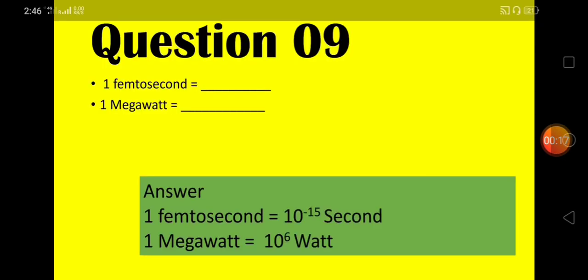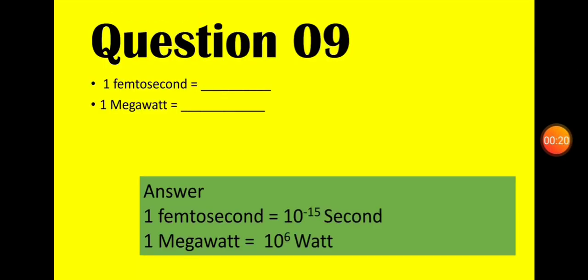Question number 9 is a one-word question. 1 femtosecond equals 10 to the power of minus 15 seconds. 1 megawatt equals 10 to the power of 6 watts. These are SI unit prefix answers.